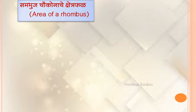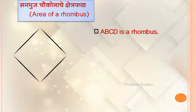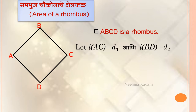We are going to find the area of a rhombus. Let A, B, C, D be a rhombus. We will draw it like this. This is rhombus ABCD. Now, let AC and BD be the diagonals, designated as D1 and D2 respectively.